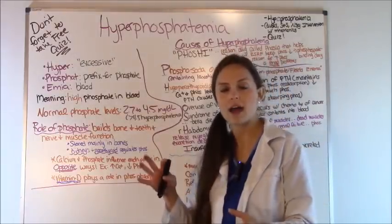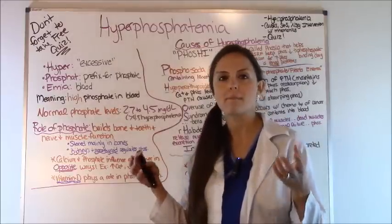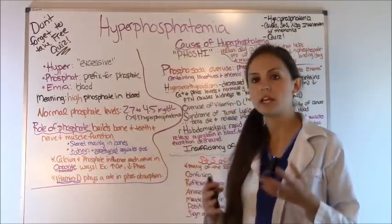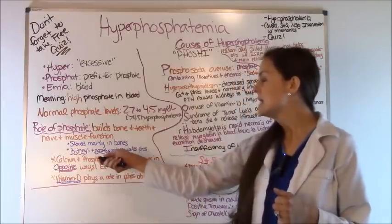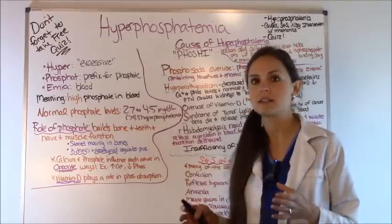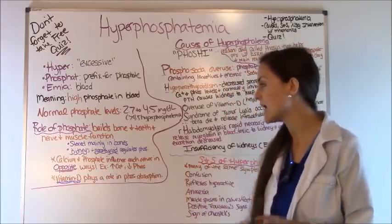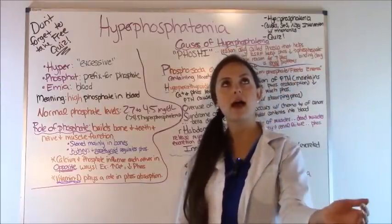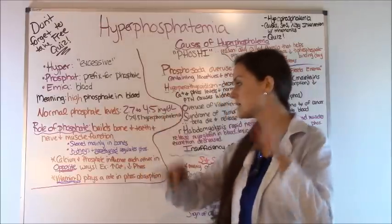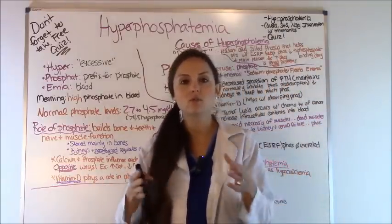Whenever you get too high phosphate levels you can have hyperactive deep tendon reflexes, and when you get low phosphate you have muscle pain as in rhabdomyolysis. Phosphate is mainly stored in your bones, and this is super important — your kidneys and your parathyroid regulate your phosphate levels, and anything affecting the kidneys especially will cause messed-up phosphate levels. Also, calcium and phosphate influence each other in opposite ways, so if you have low calcium levels you're probably going to have high phosphate levels and vice versa.